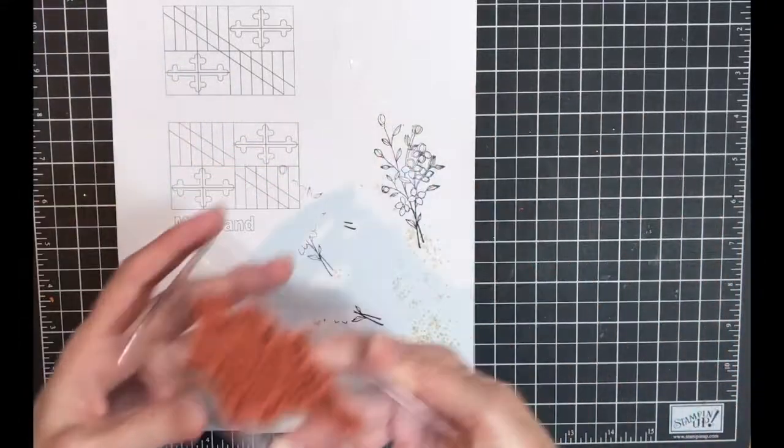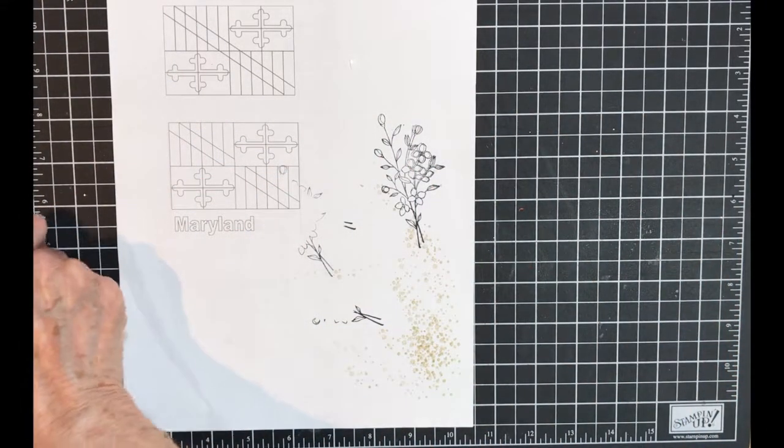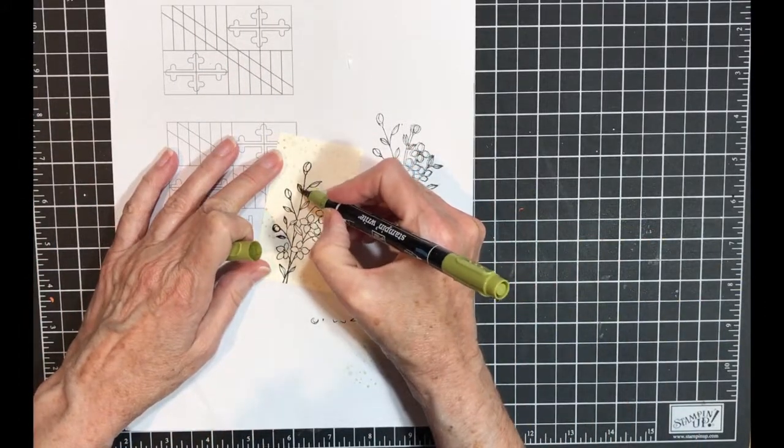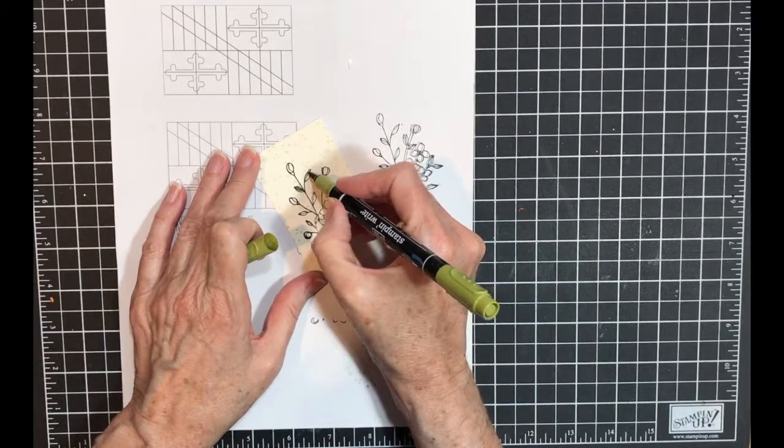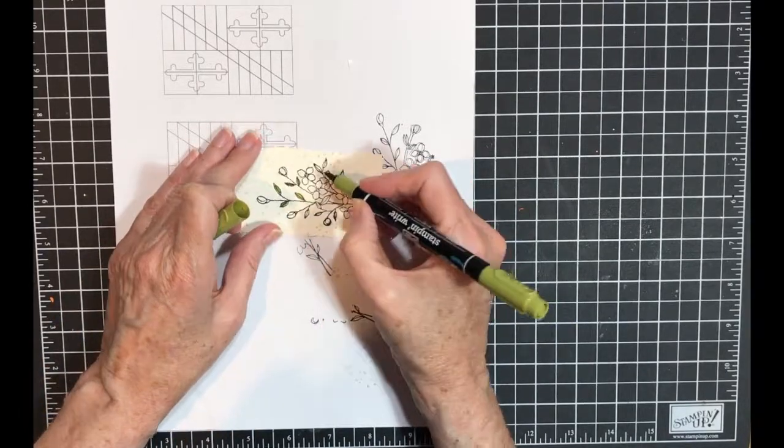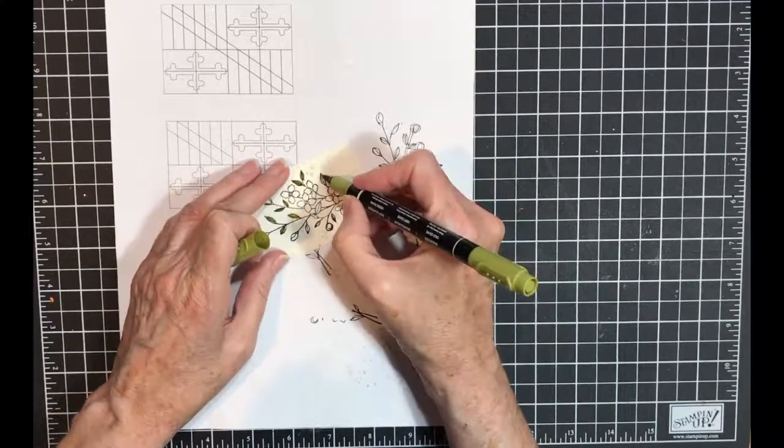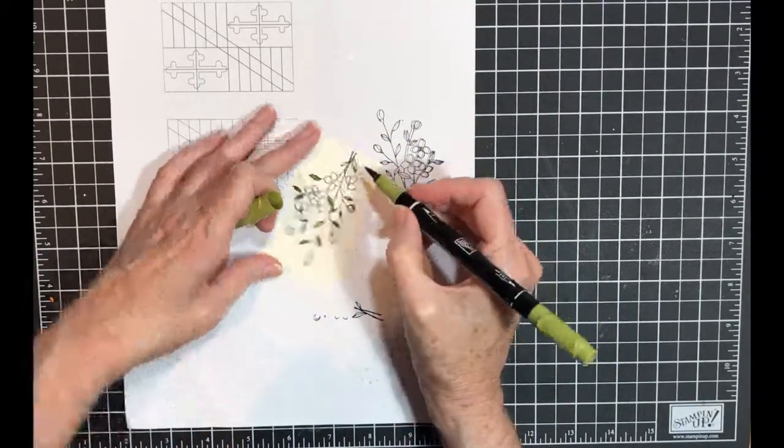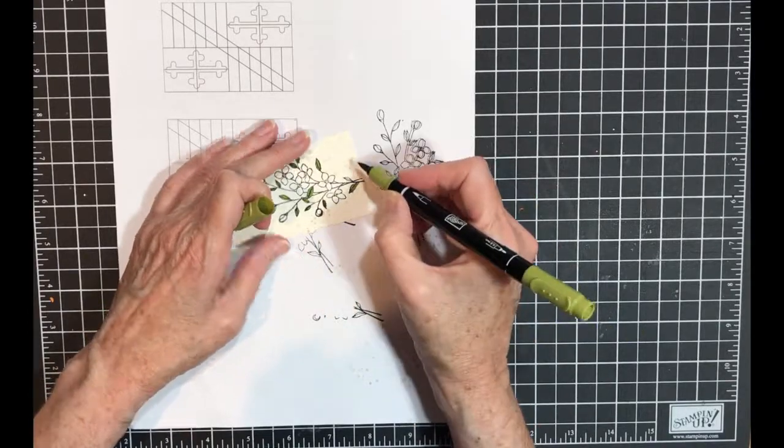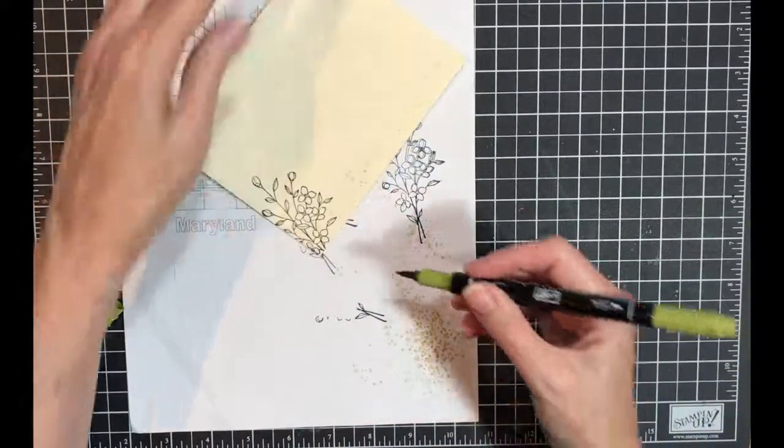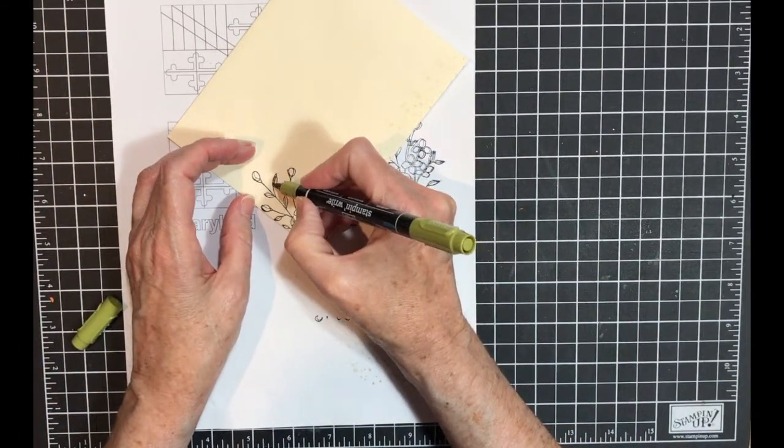Now for the coloring. I'm going to color my leaves with my Old Olive marker. Okay, and I will do the same on my envelope.